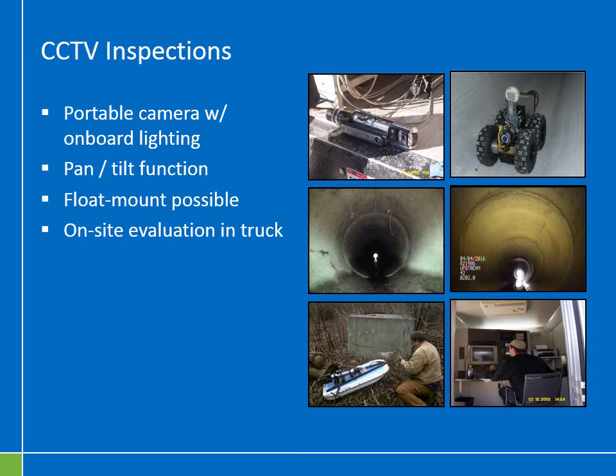Another key feature of a CCTV camera is that the units often have an operator located nearby in a control vehicle — some sort of small truck. The operator inside this control vehicle is responsible for driving the camera, stopping it when they see defects, and fully recording the damage. These operators have sophisticated inspection software inside the trucks, so as they go along they're conducting real-time evaluations and identification of defects.